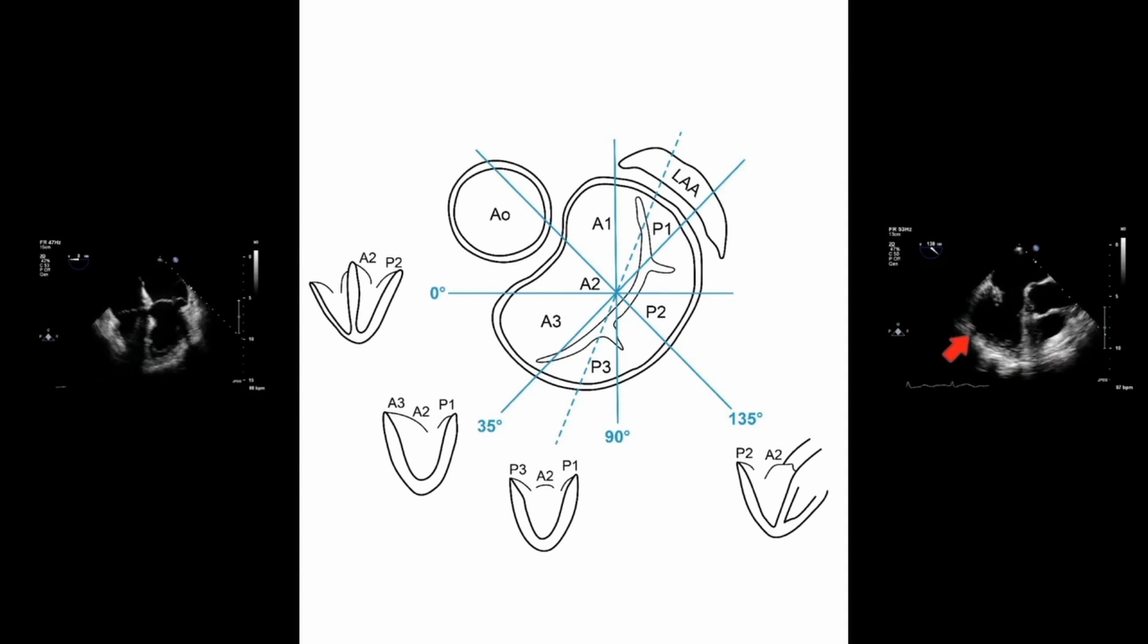On the right hand side of the screen we have a different view of the mitral valve. This is the long axis view of the heart. This is obtained at an imaging plane angle of 135 degrees and as you can see from the diagram, this also cuts through the A2 and P2 mitral valve segments.